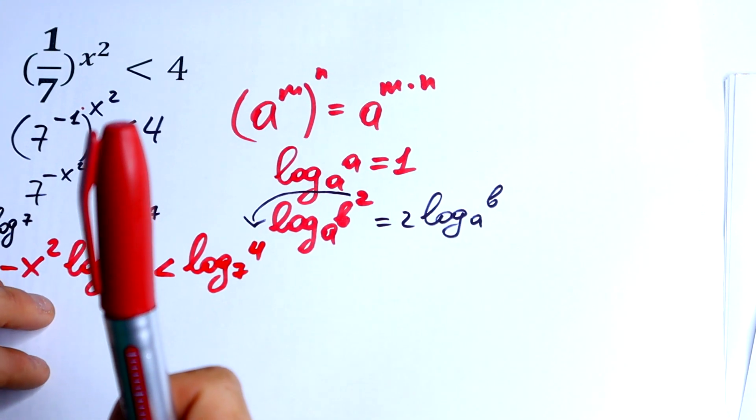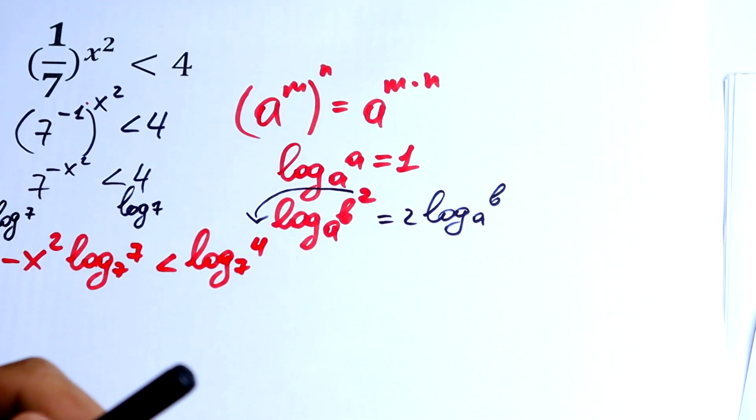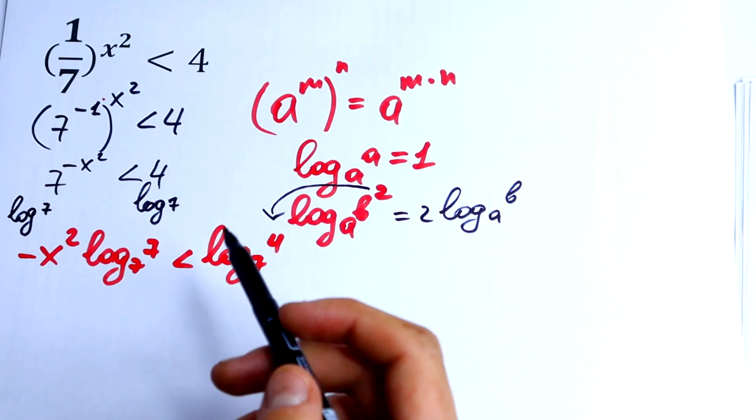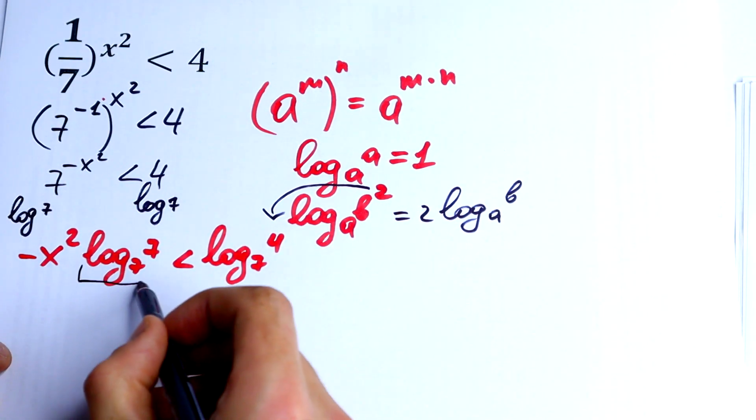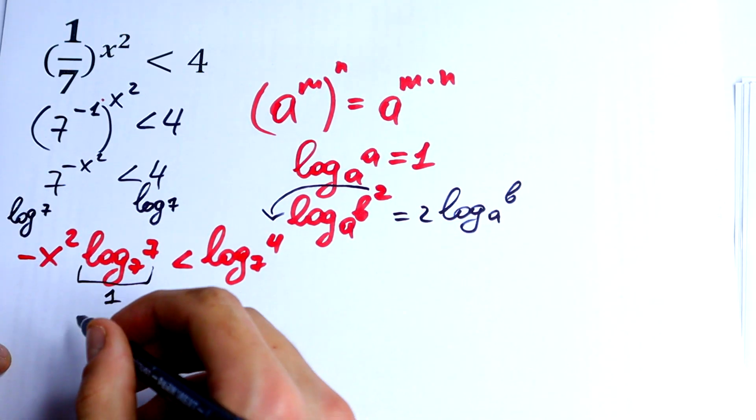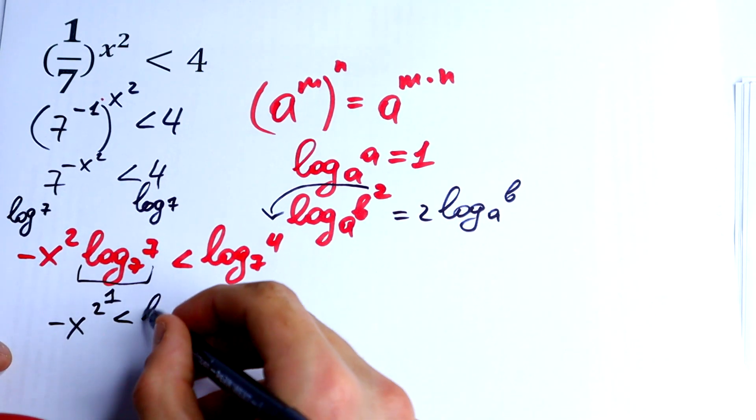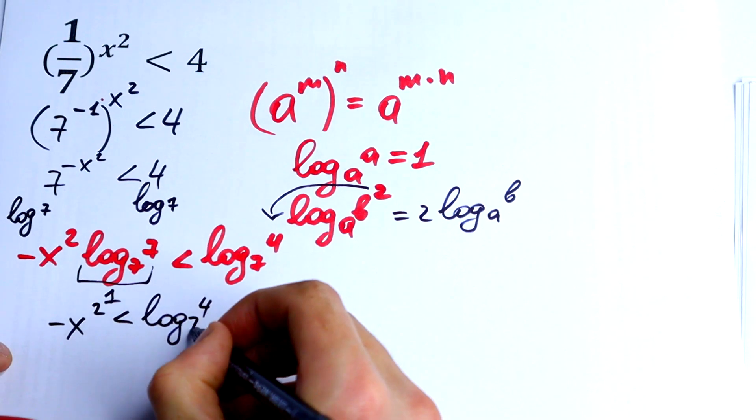I think it will be easy for you. Okay, what we doing next? This would be equal to 1. So we will get minus x squared is less than log base 7 of 4.